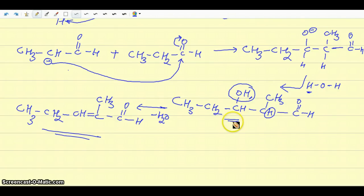Usually, if you don't heat the mixture, the aldol product can be isolated. But if you heat it, dehydration is an easy process and you get the alpha-beta unsaturated aldehyde.